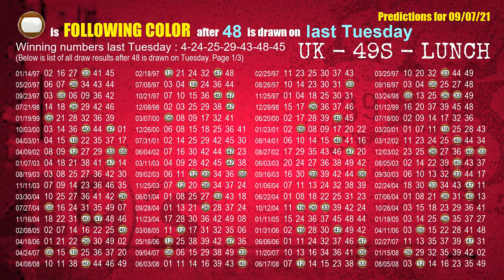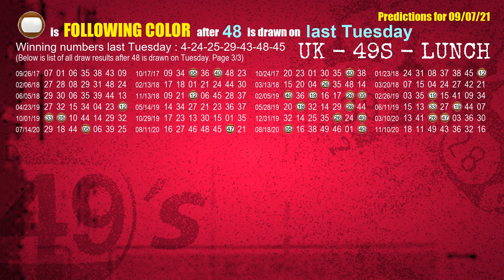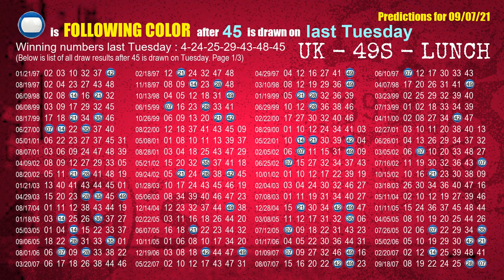The sixth winning number last Tuesday is 48. The most frequently following color is brown when 48 is the winning number on last Tuesday. The booster winning number last Tuesday is 45. The most frequently following color is blue when 45 is the winning number on last Tuesday.